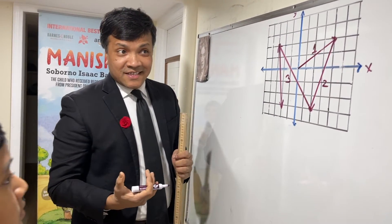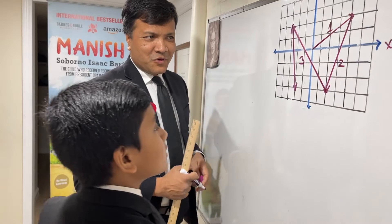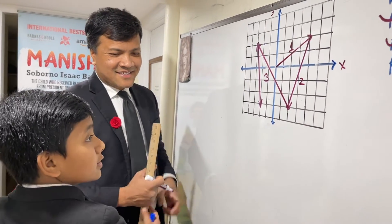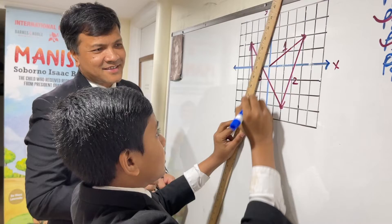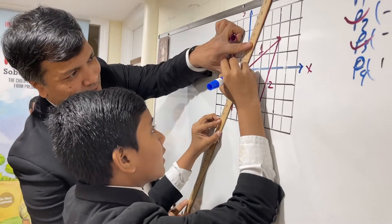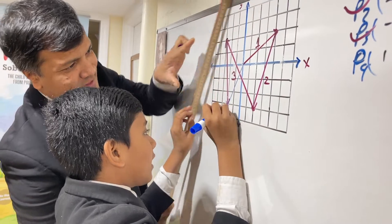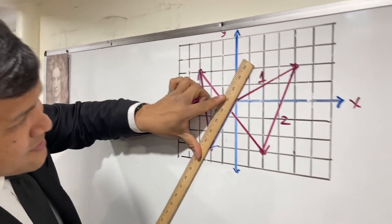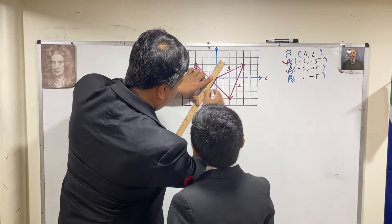Now you're going to draw the resultant. What would be the resultant? The resultant would be this — yes, that's the resultant. All right, make the resultant a little nicer.